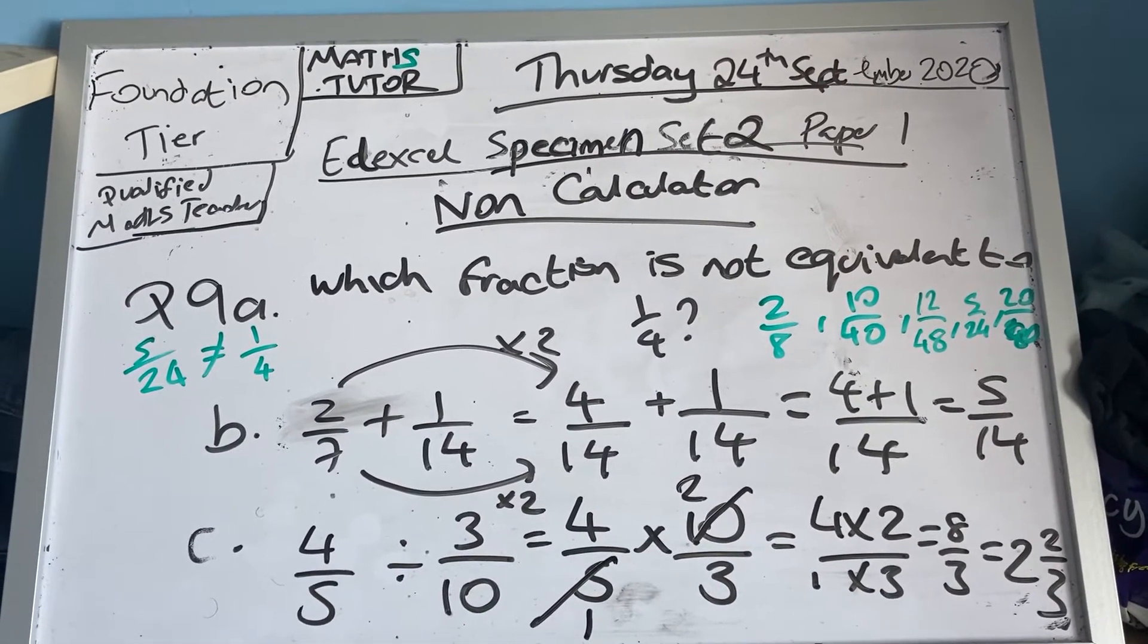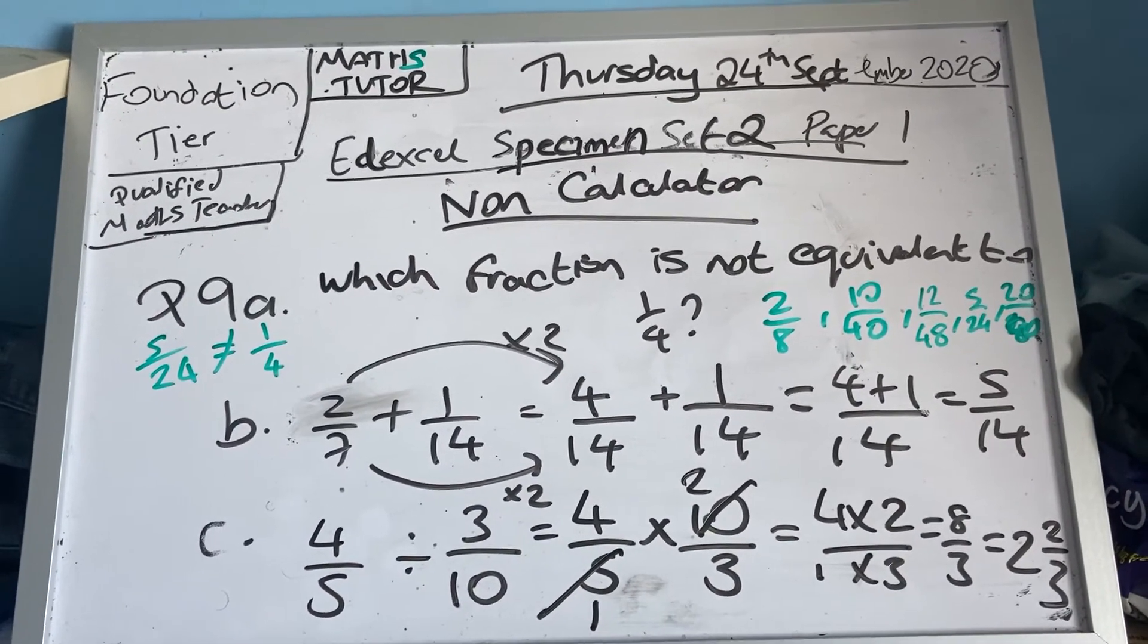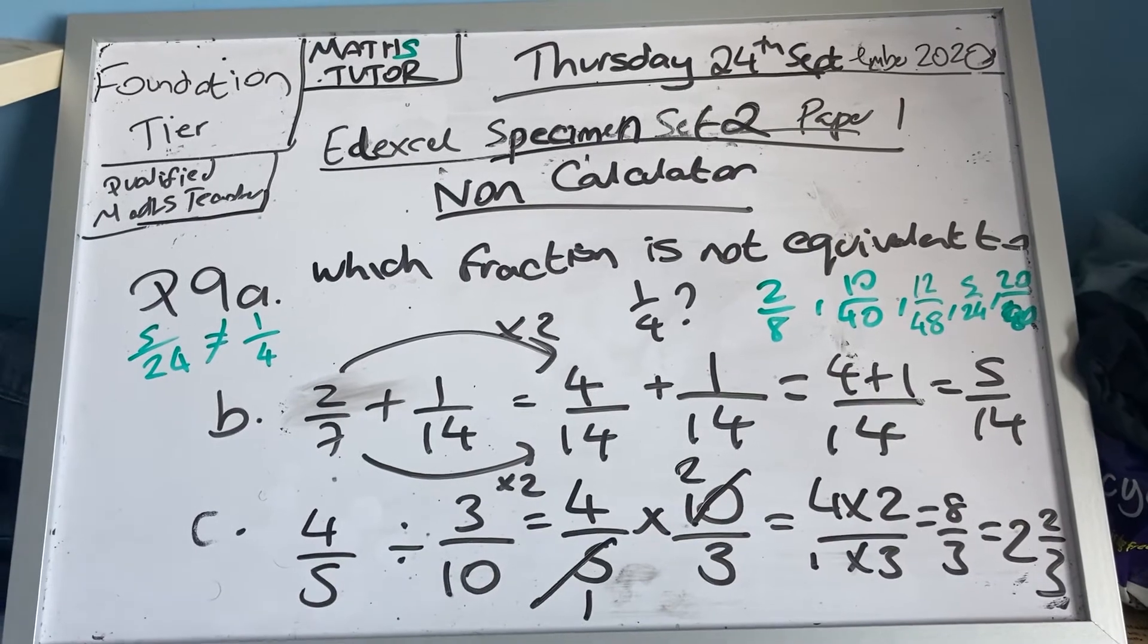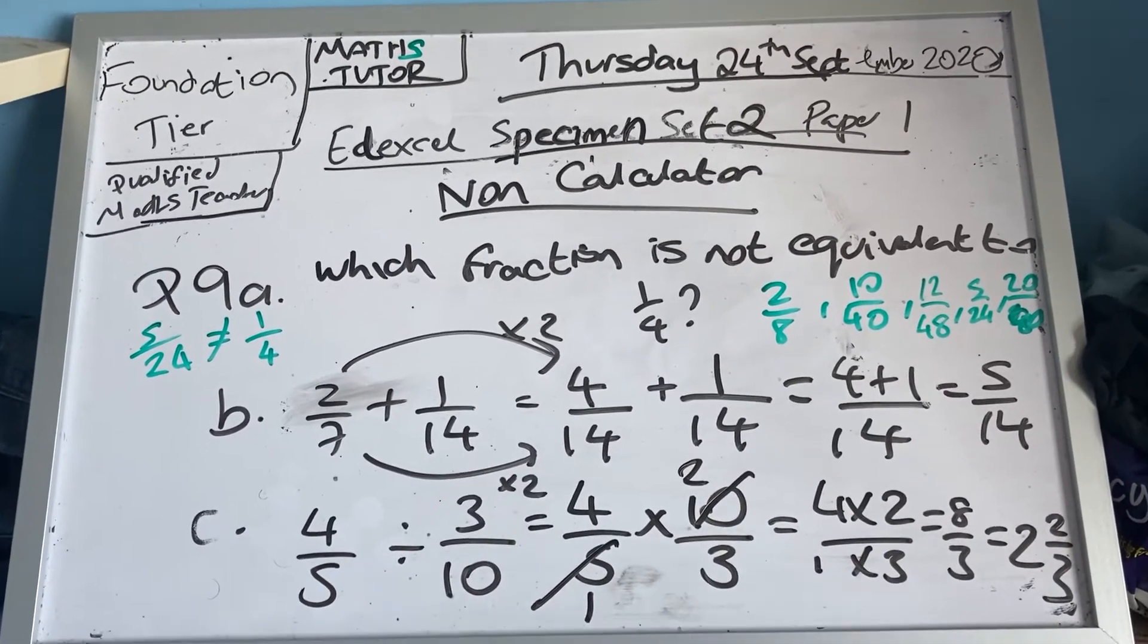Part b says work out two-sevenths plus one-fourteenth. Well, I've got to put it under a common denominator. So seven times two is fourteen, two times two is four, so it's four over fourteen plus one over fourteen.